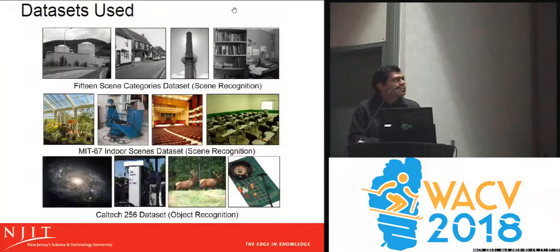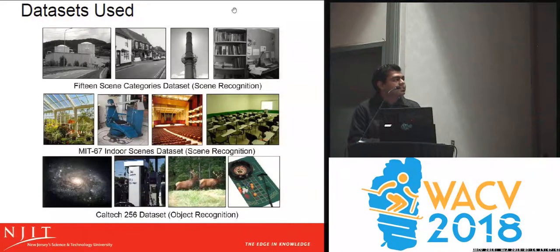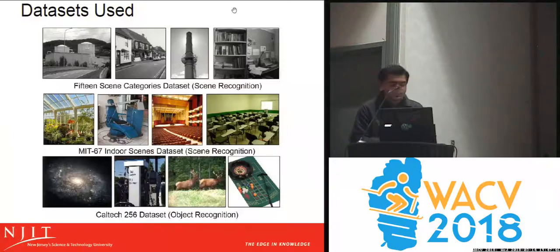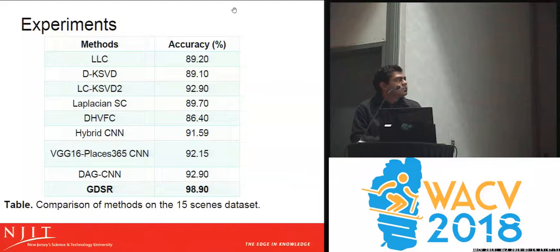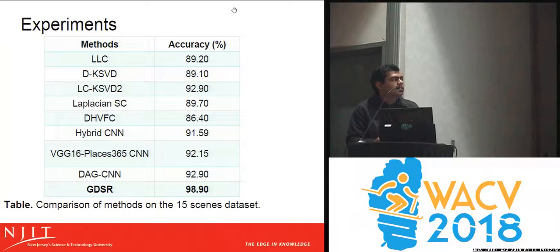These are the datasets used for evaluation. We used 15 Scene Categories, MIT 67, and Caltech 256 datasets. We compared our method with state-of-the-art sparse coding as well as deep learning methods, and these are some of the experimental results.